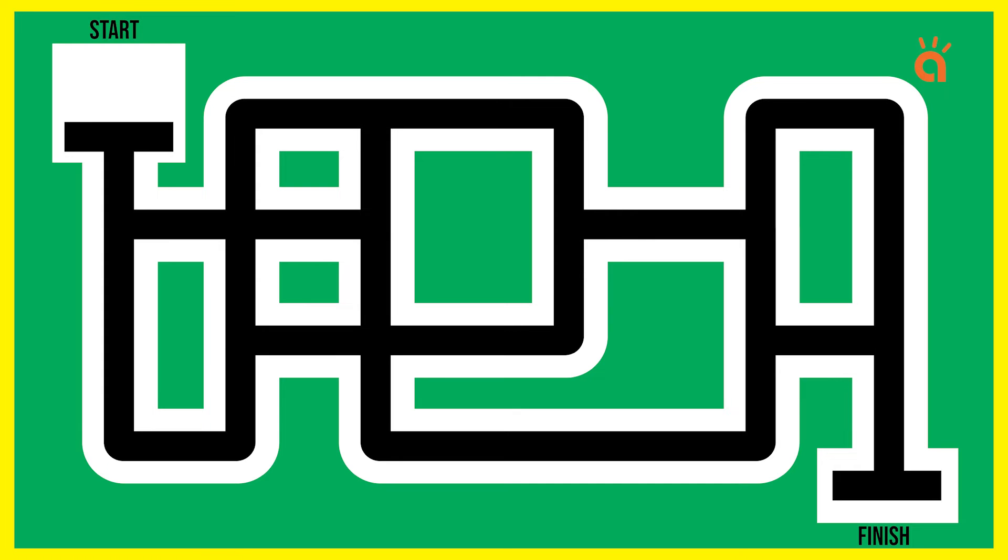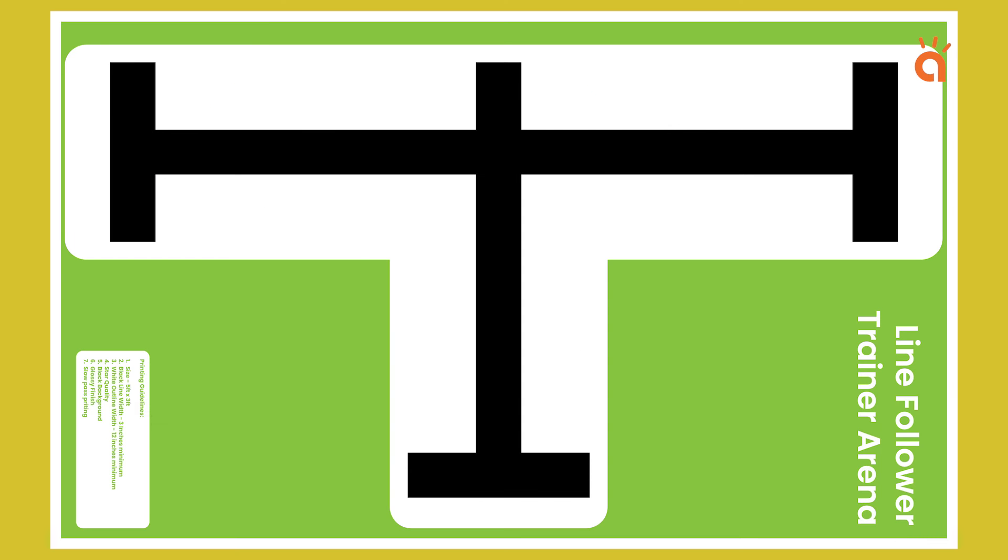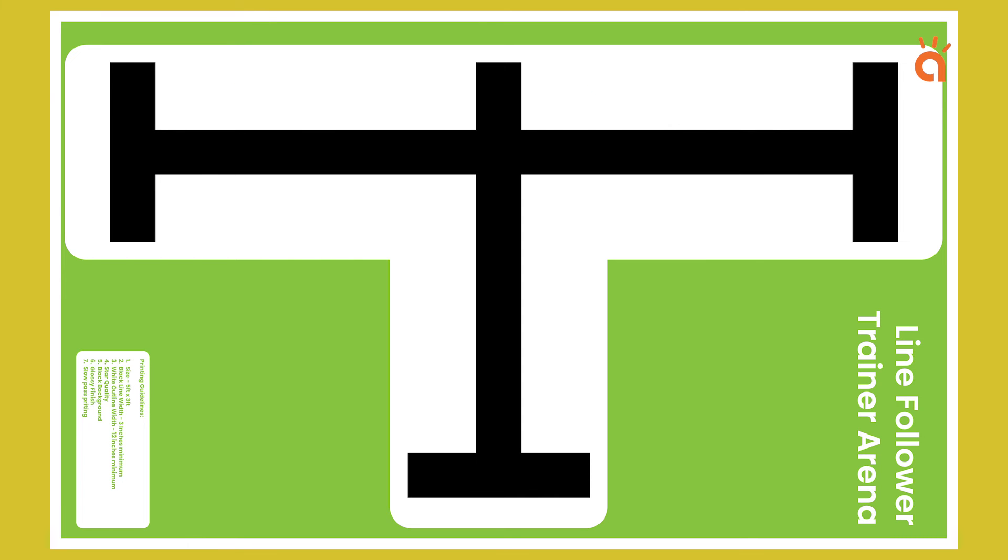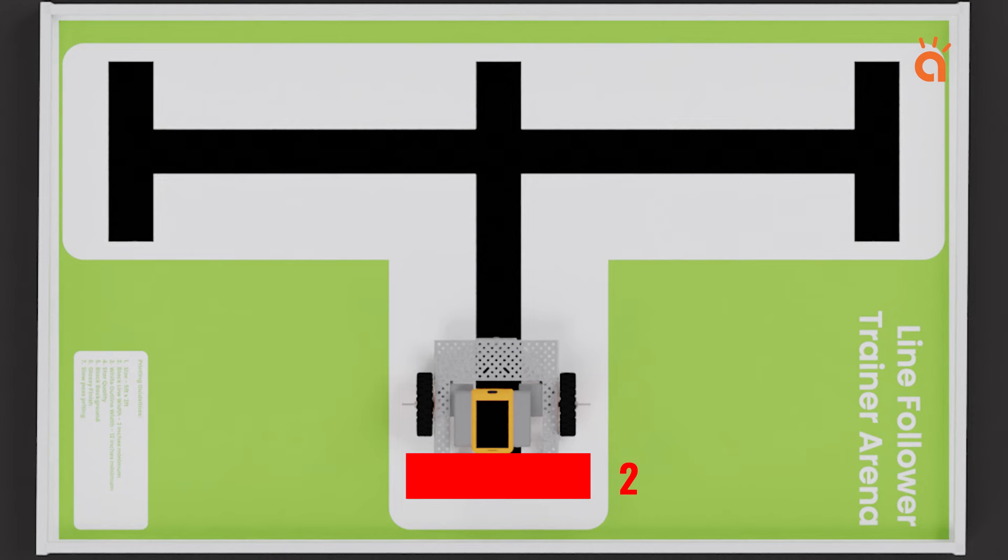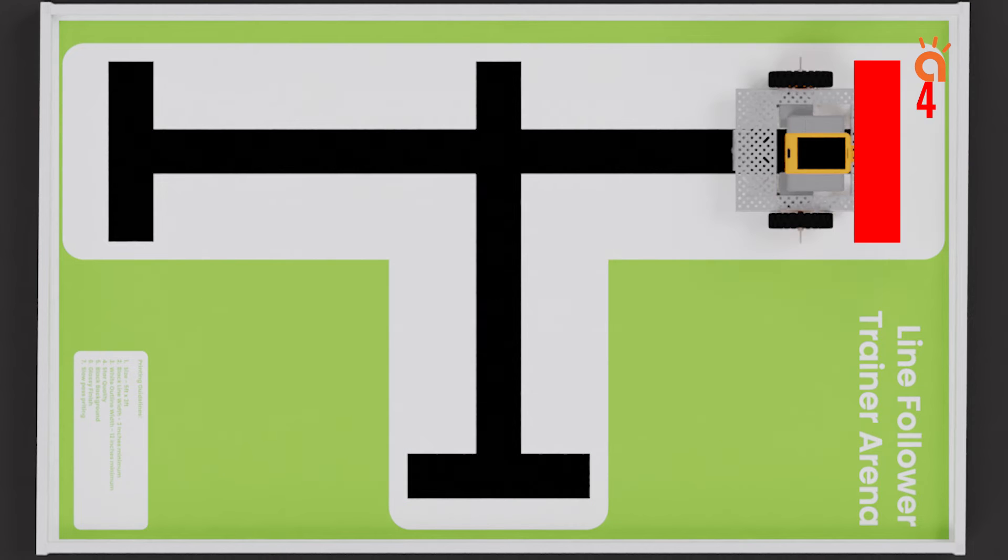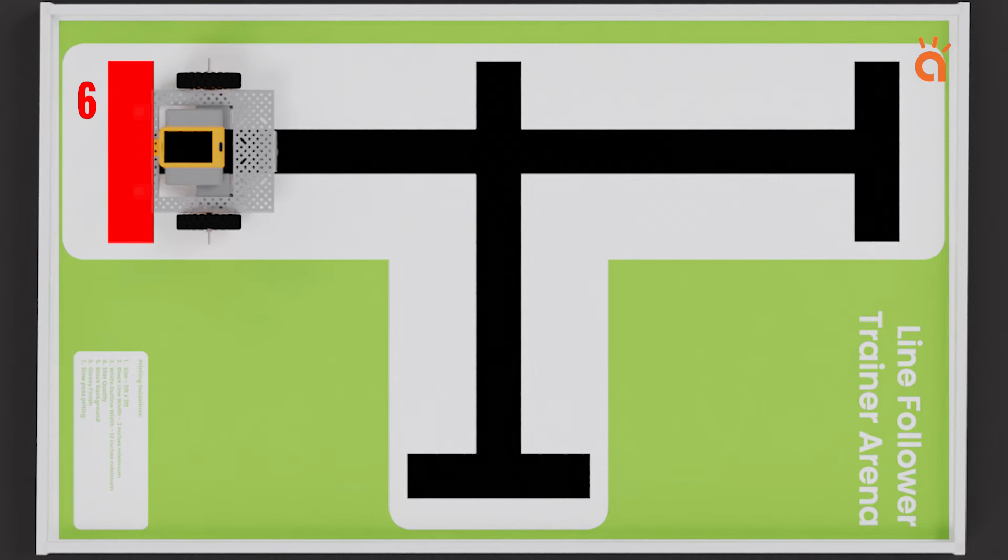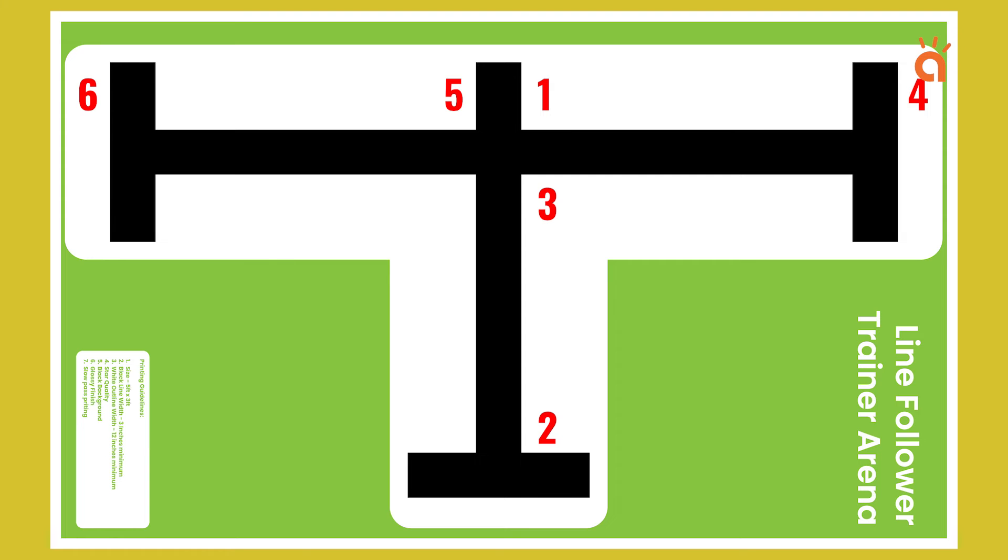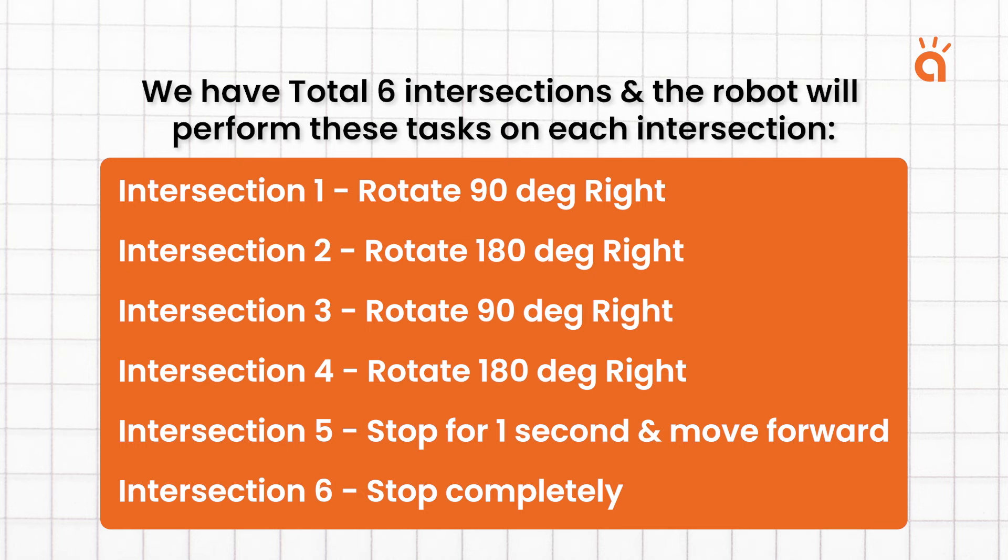In any line follower arena, there are several intersections. And on each intersection, the robot is required to perform various actions. Let's start by counting the intersection on our arena. 1, 2, 3, 4, 5, and 6. We have total 6 intersections and the robot will perform these tasks on each intersections.